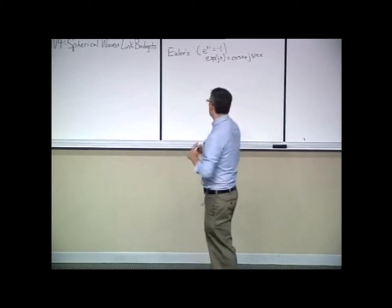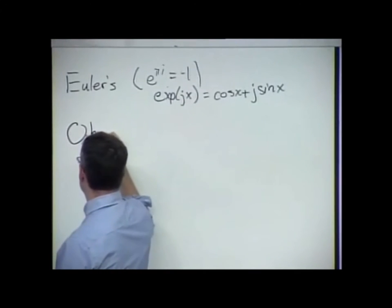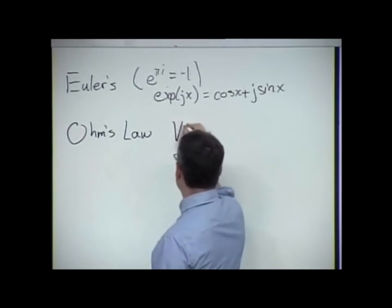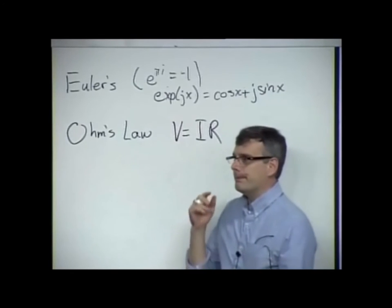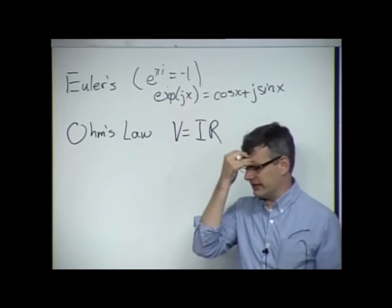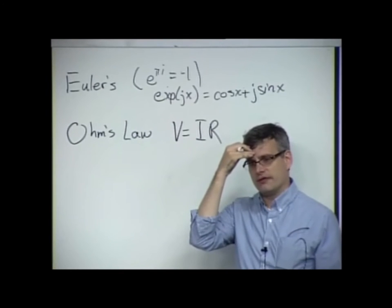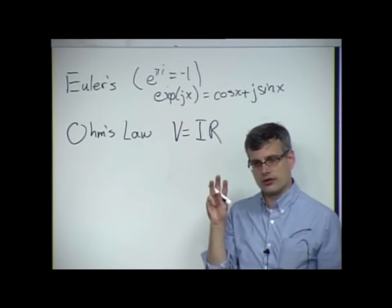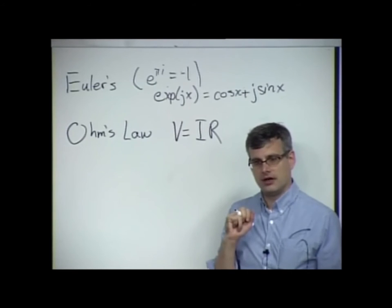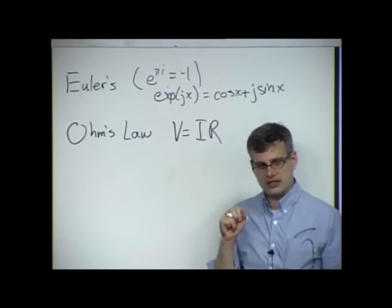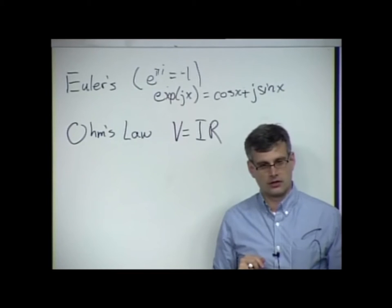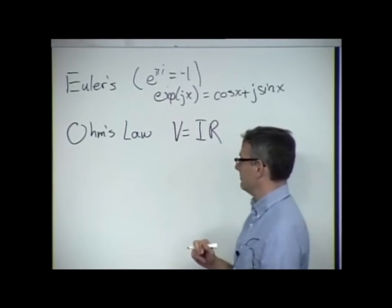Ohm's law — that's a good electrical engineering answer. I suspect you know how to build circuits if that's your favorite equation. V equals IR. In fact, there's a funny story on the Army Corps of Engineers certification exam. There was a question asking what are the three most fundamental laws of electrical engineering. The answer: the first was V equals IR, the second was I equals V over R, and the third was R equals V over I.